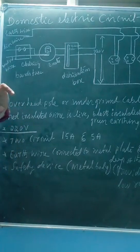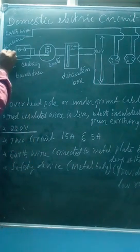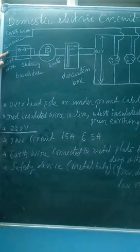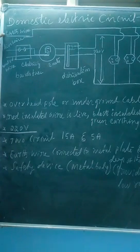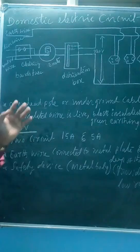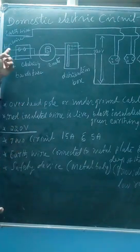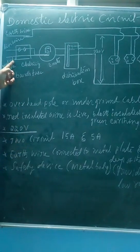Now, we have three types of wires used in our house. One is the live wire, second is the neutral wire, and third is the earthing wire. Live and neutral are the very important wires.